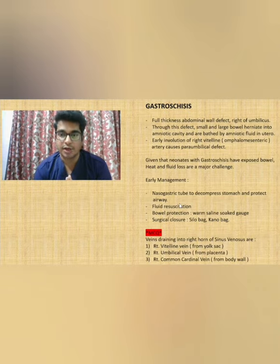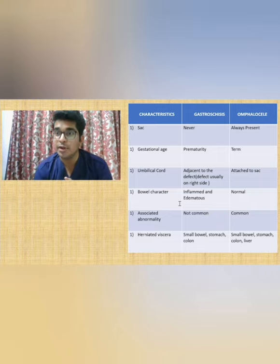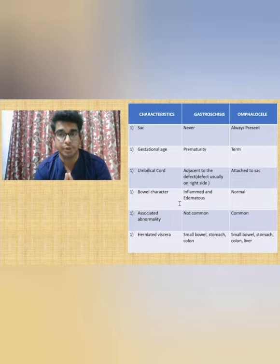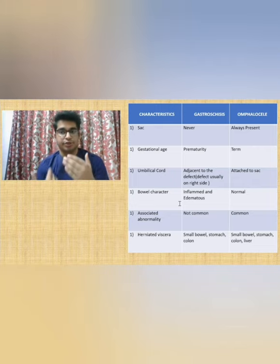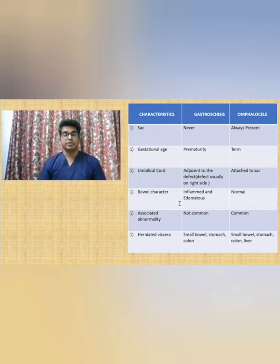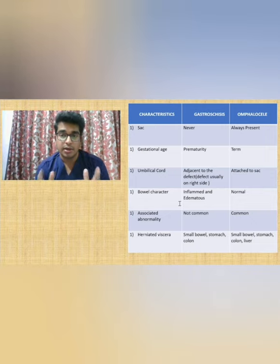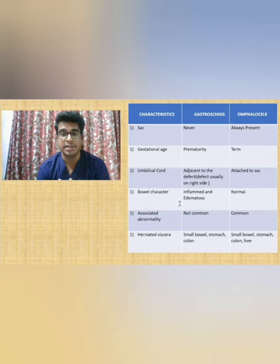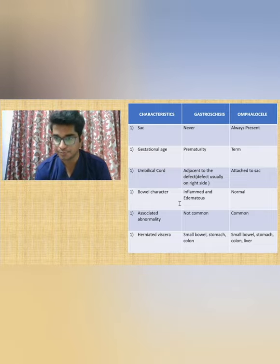Coming back to the differentiating features, it looks easier now. In Omphalocele, a sac is present. Omphalocele is generally seen at around term, whereas Gastroschisis is more common in premature babies. In Omphalocele, the umbilical cord is attached to the sac. In Gastroschisis, the defect is usually towards the right side because the right omphalomesenteric artery is commonly involved. The bowel in Gastroschisis is inflamed and edematous due to direct contact with amniotic fluid. Omphalocele is associated with congenital anomalies such as Down syndrome, Patau syndrome, and bladder exstrophy, giving it a poorer prognosis compared to Gastroschisis.